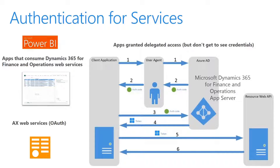Certain applications can consume Microsoft Dynamics 365 for Finance and Operations web services. For example, we have Power BI, which is consumed from the OData service. We also have Microsoft Azure Active Directory (AAD) as the native client application — this flow uses a username and password for authentication and authorization. Then we also have the web application, which is the confidential client — an application that can keep a client password confidential. The authorization server assigns this client password to the client application. This will be supported post-RTW.